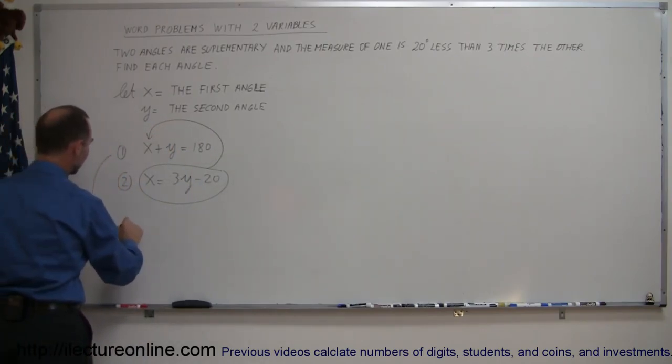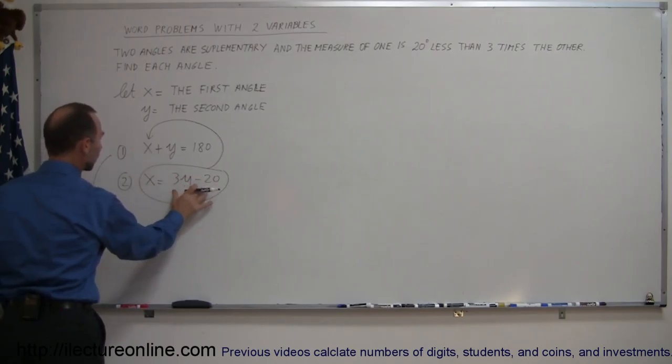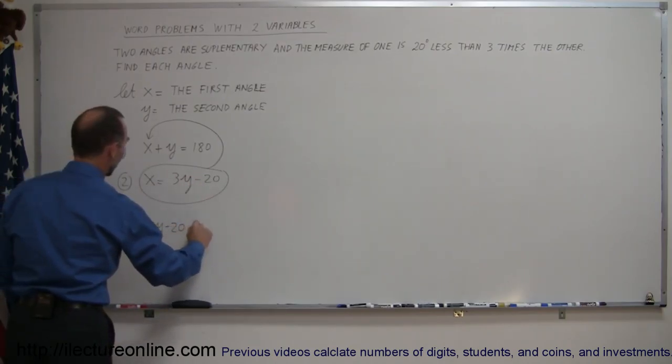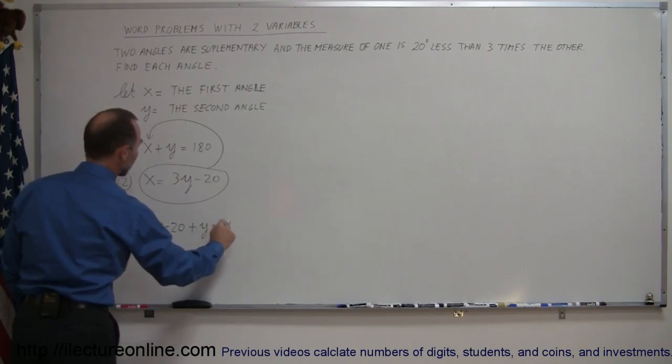When I do that, my first equation becomes, instead of x, I write 3y minus 20 plus y equals 180.